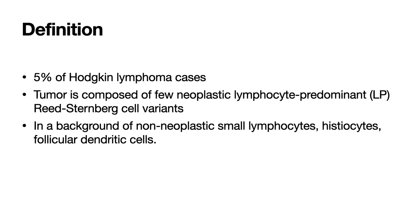The tumor is composed of few neoplastic lymphocyte predominant cells, also called LP cells, which are the Reed-Sternberg cell variant. They are also known as popcorn cells, and they usually have a background of non-neoplastic small lymphocytes, histiocytes, and follicular dendritic cells, indicating a possible relationship to B cell follicles.